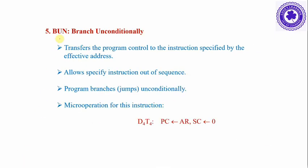BUN (Branch Unconditionally) transfers program control to the instruction specified by the effective address, allowing a jump out of the normal instruction sequence. It branches unconditionally by storing the address value from the address register into the PC, so that the next instruction to be executed is the target instruction.